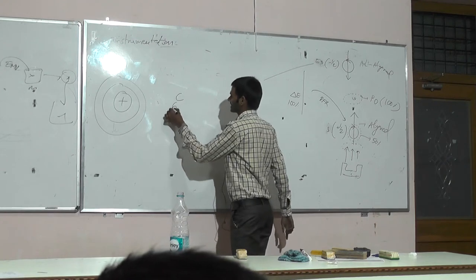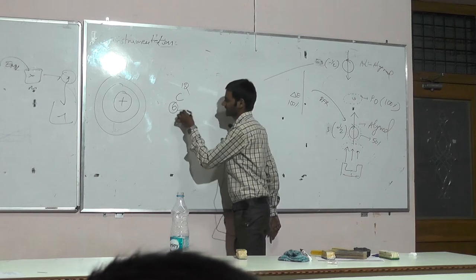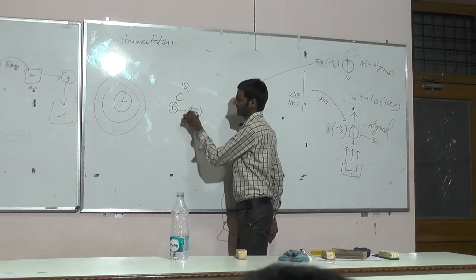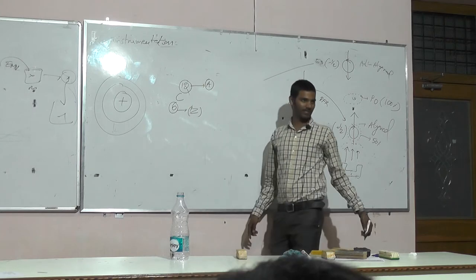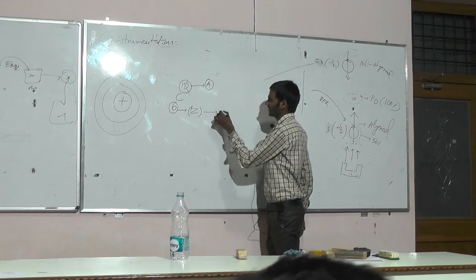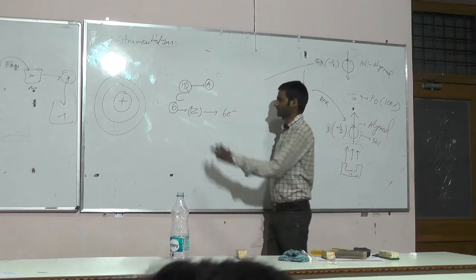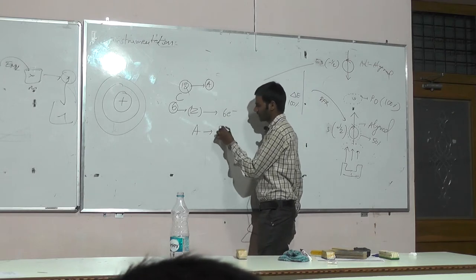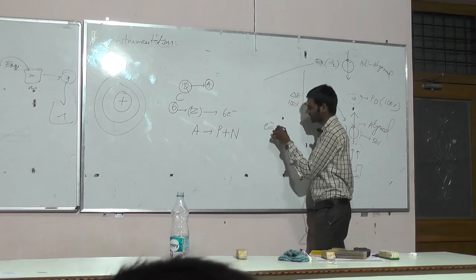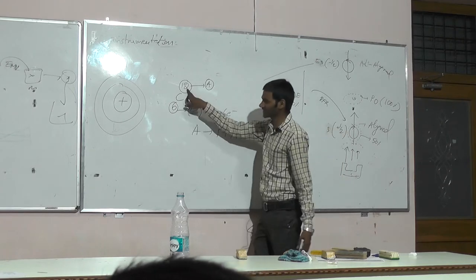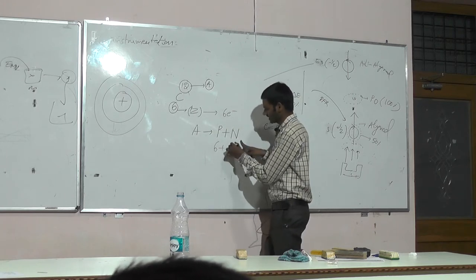A simple element, carbon C6-12. The underscript C6 is atomic number, capital Z. The superscript 12 is atomic mass number, capital A. The atomic number is the number of electrons — 6 electrons are there. The atomic mass number is the number of protons plus neutrons. Since number of electrons equals number of protons, there are 6 protons and 6 neutrons.